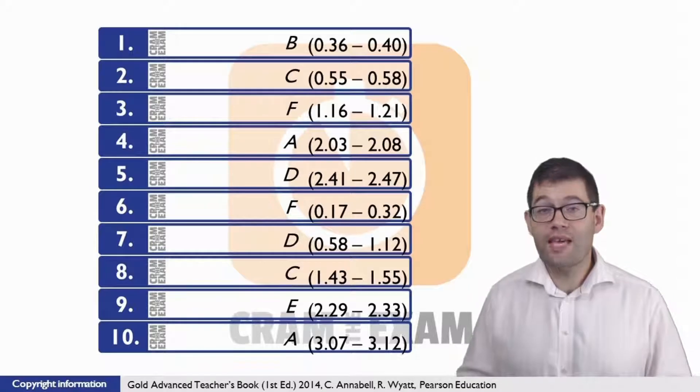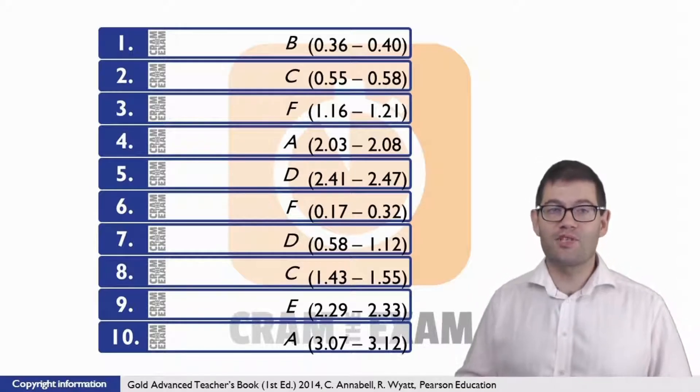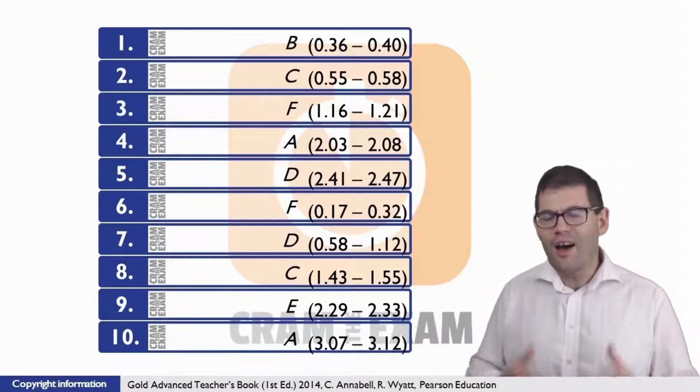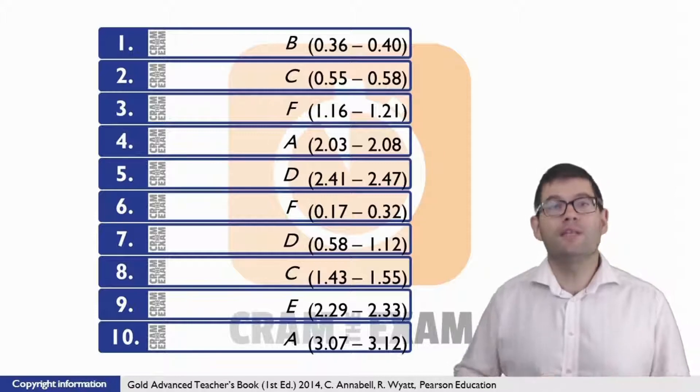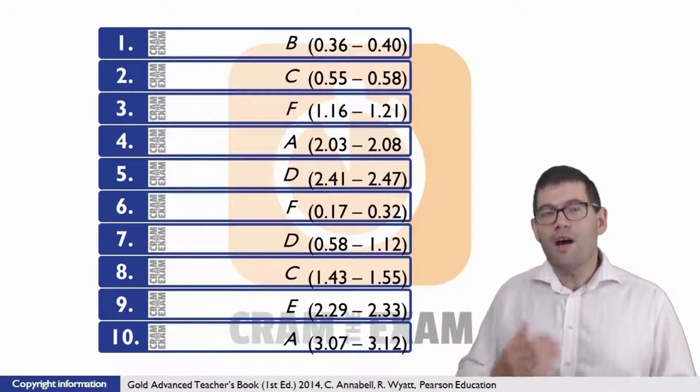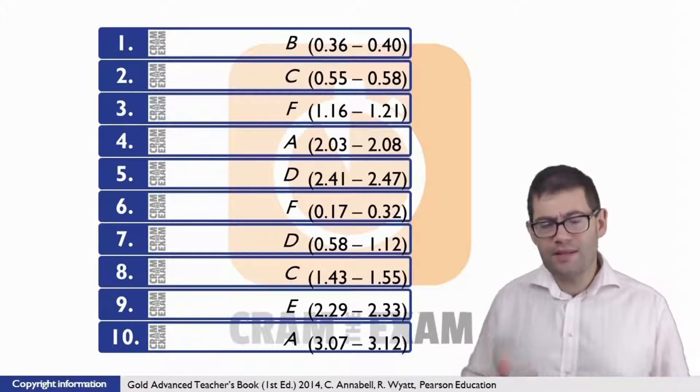For question three, the answer is F, being easily tempted by questionnaires, because speaker three says 'I'm a real sucker.' In other words, I'm easily tempted by, I'm a real sucker for quizzes and personality tests.